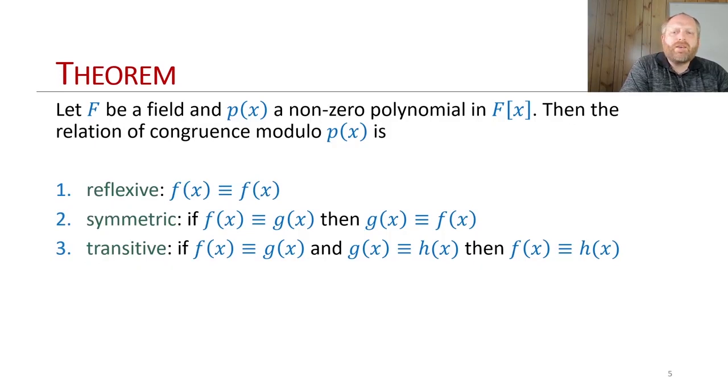So again, we're going to let F be a field, and p(x) is going to be a non-zero polynomial in F[x]. Then the relation of congruence modulo p is reflexive, symmetric, and transitive. So we have an equivalence relationship happening here.